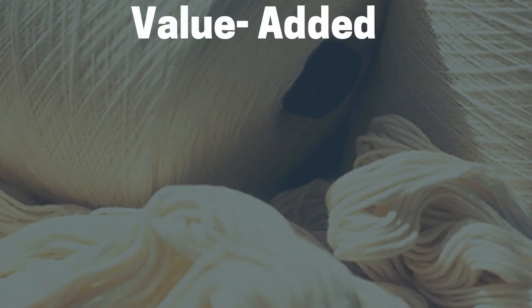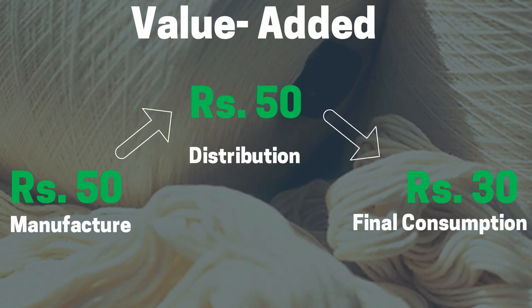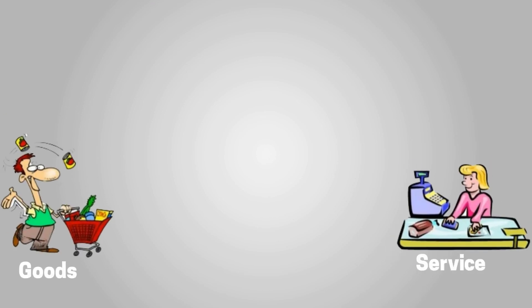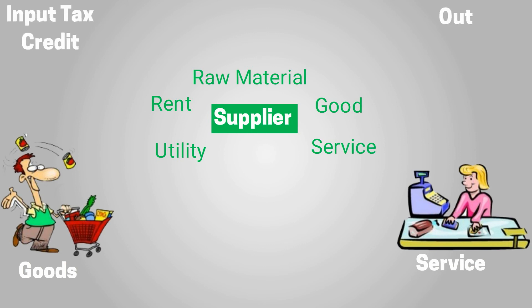The last feature to be discussed is value addition. On every stage discussed earlier, a certain value is added to the goods. In the given example, an extra amount of 50, 50, and 30 rupees is added at the manufacture, distribution, and final consumption stages respectively. GST is charged on such value added. In the general course of business, tax is paid on the total cost of goods and services, but the actual tax liability comes down to tax on such value added. This actual tax liability is calculated after deducting the input tax credit from the taxes paid on outward supplies.